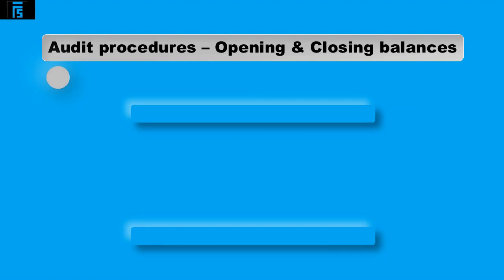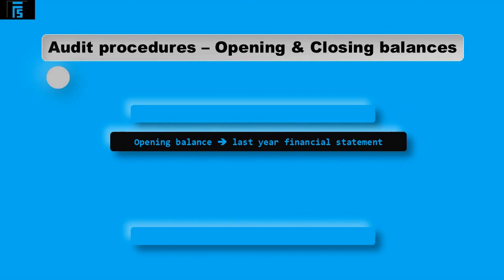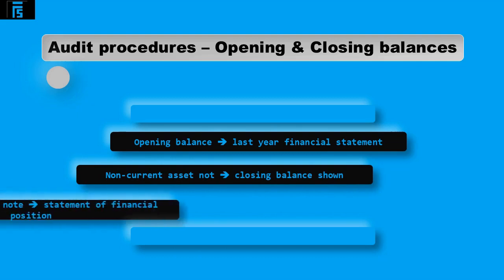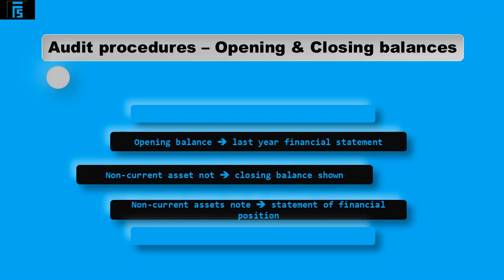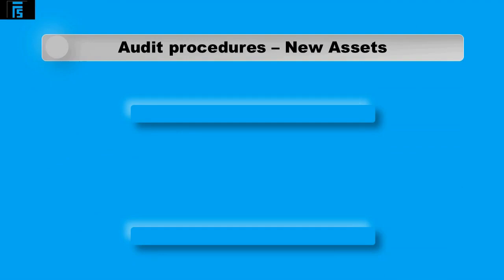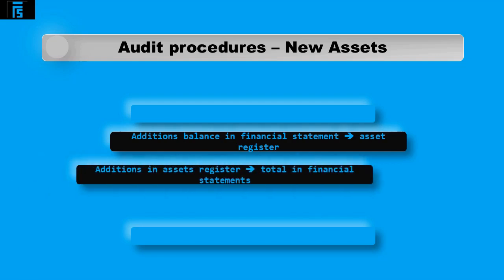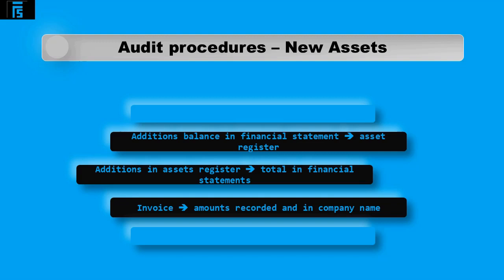Audit procedures for opening and closing balances include agreeing the opening balance to last year's financial statements, adding up the non-current asset note to ensure the auditor agrees with the closing balance shown, and agreeing the closing balance for non-current assets in the note to the balance shown on the statement of financial position. For new assets purchased, audit procedures include agreeing the additions balance in the financial statements to the asset register to verify completeness, and tracing additions in the year to the invoice to agree the amounts recorded and whether the invoice is in the company name — this verifies rights and obligations.